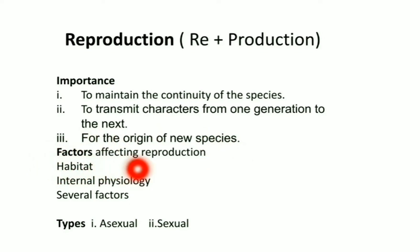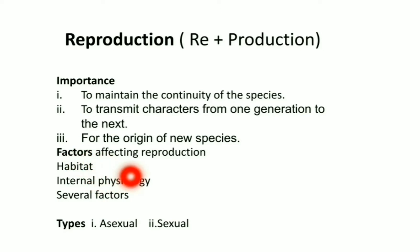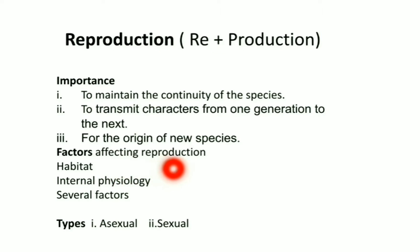Factors affecting reproduction: Habitat is the place where organisms live. Every living organism has its own specific habitat, and habitat is the most affecting factor in reproduction.